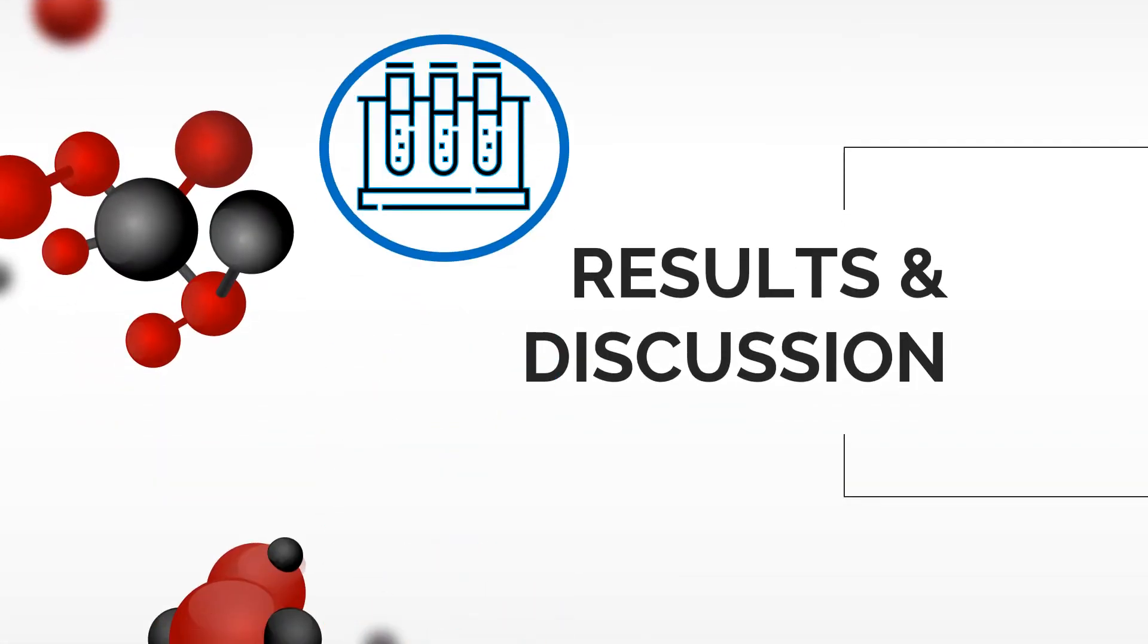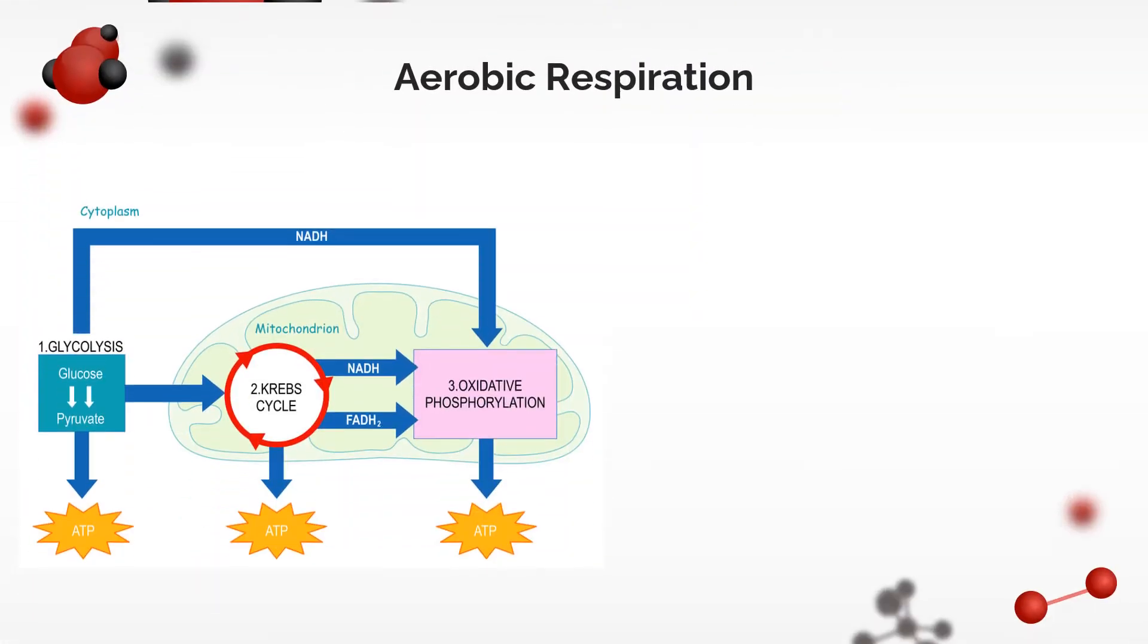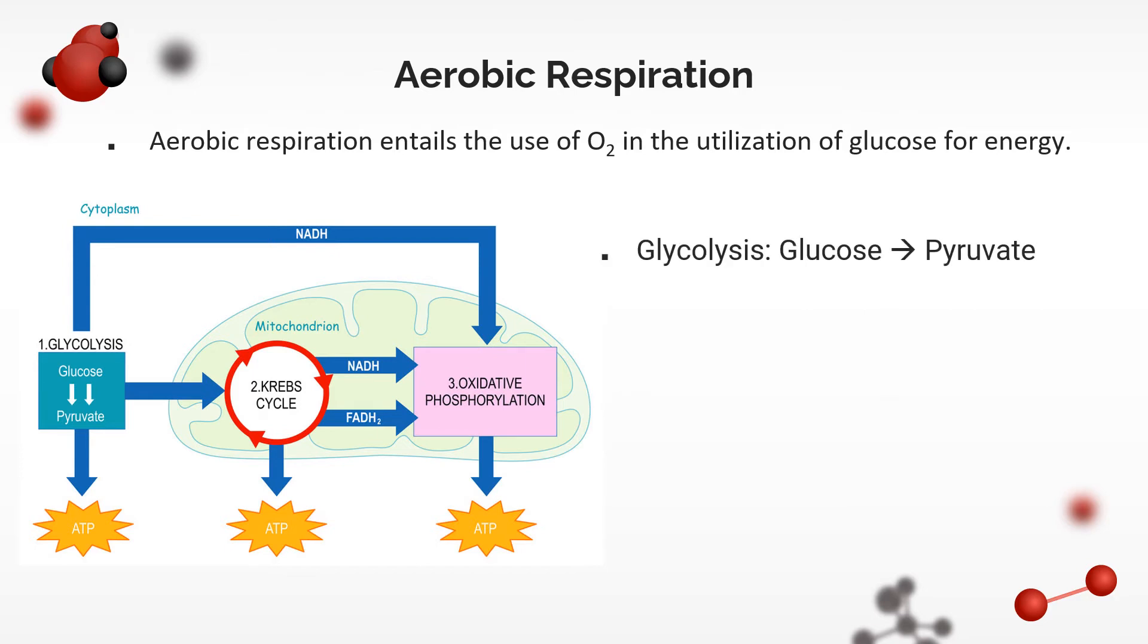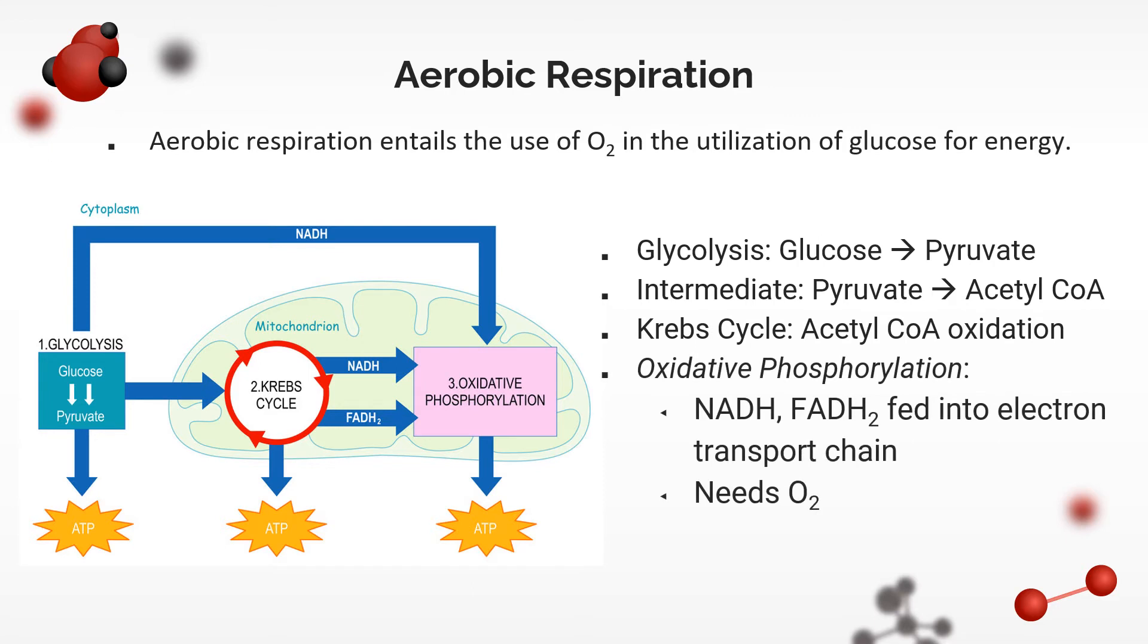Let's move on to the results and discussion. Let's just go over aerobic respiration quickly. Aerobic respiration entails using oxygen gas in the utilization of glucose for energy. This involves glycolysis, an intermediate step, the Krebs cycle, and oxidative phosphorylation. The first occurs in the cytosol, and the rest in the mitochondria.